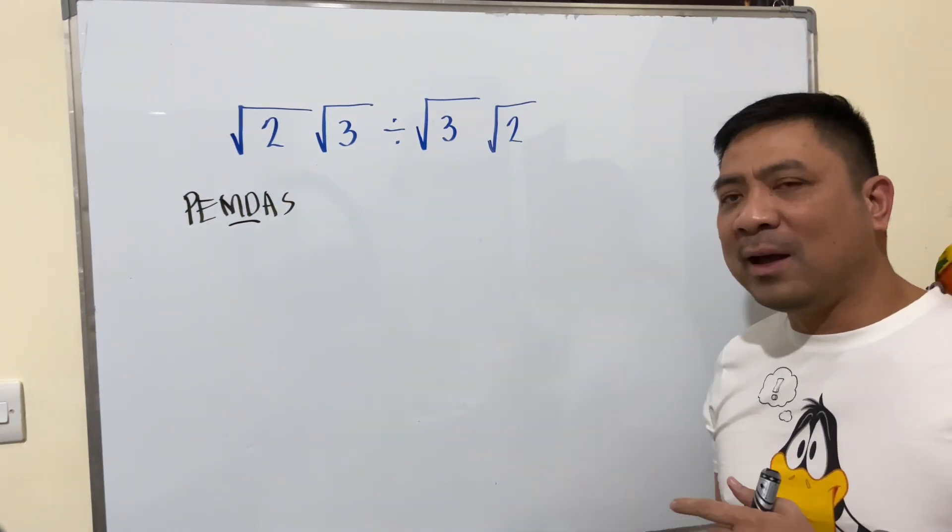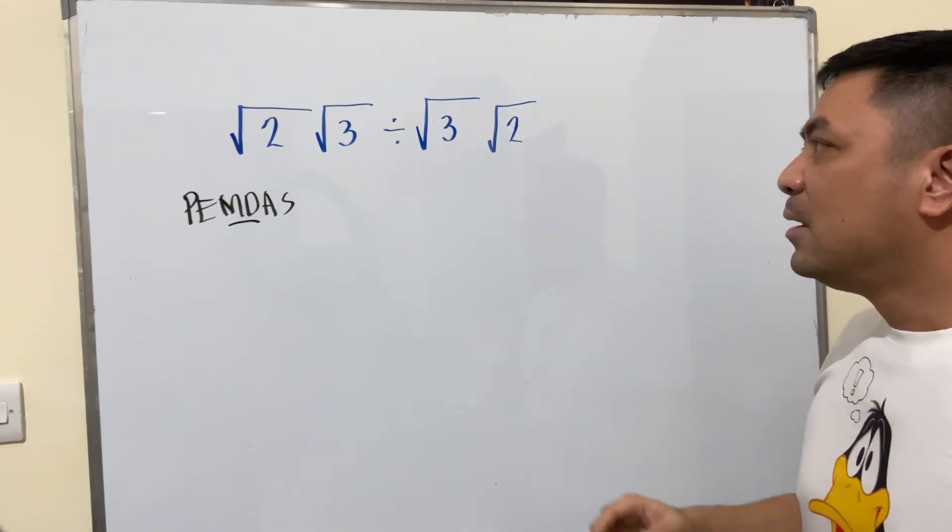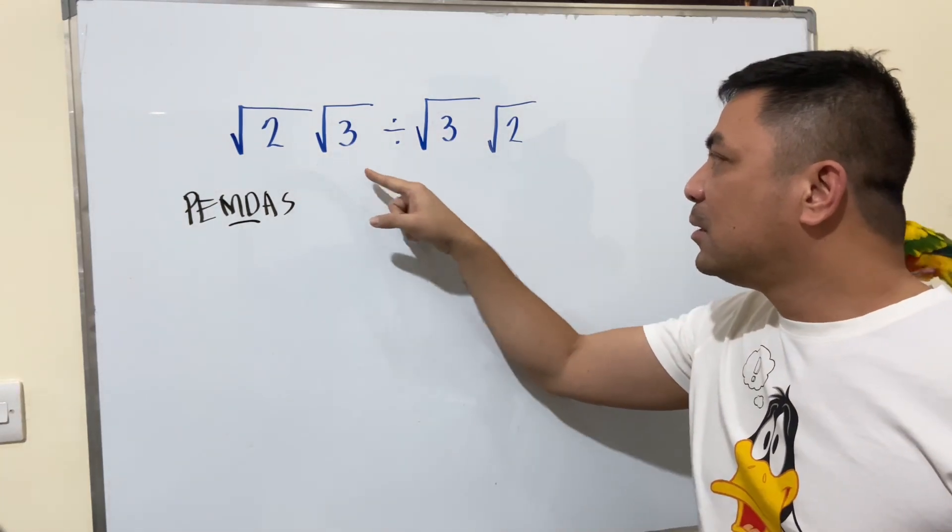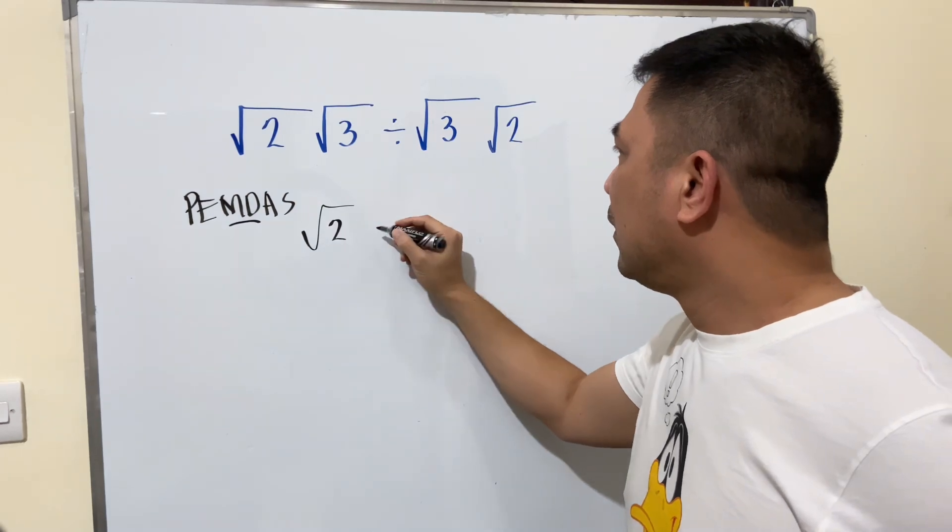In this case, square root of two times square root of three. We can do that: square root of two, square root of three, divided by. We can multiply this one first, and then divide by square root of three.